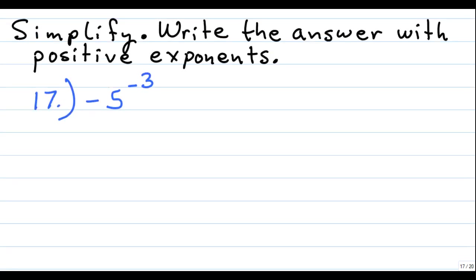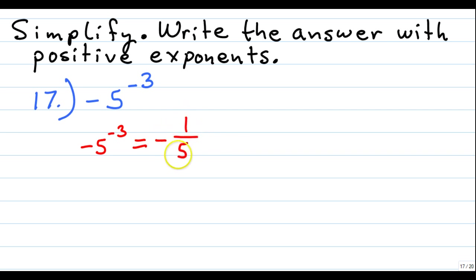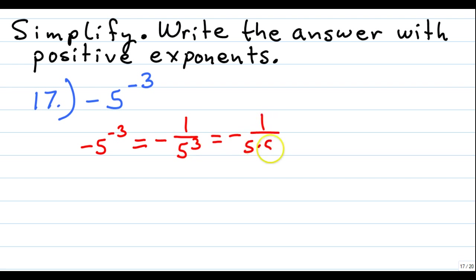Next we're asked to simplify and write the answer with a positive exponent. We have negative 5 raised to the negative third power. To get a positive exponent, we rewrite it as its reciprocal: negative 1 over 5 to the third. Taking the reciprocal removes the negative from the exponent. This gives us negative 1 over 5 times 5 times 5, which equals negative 1 over 125.